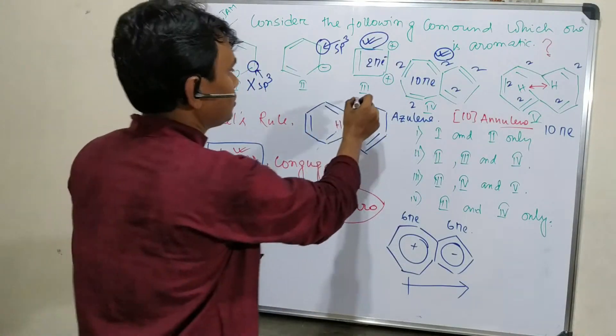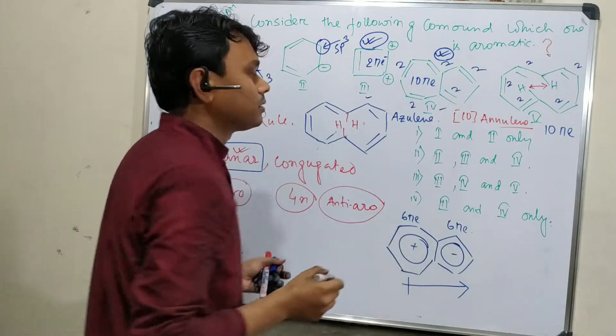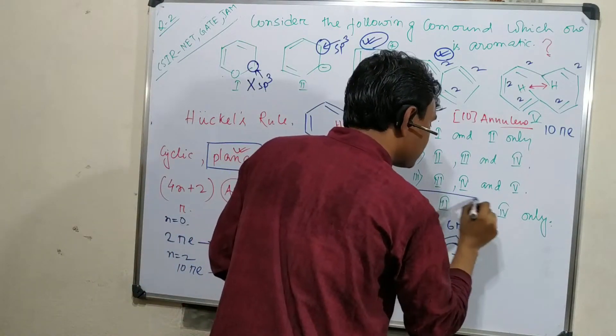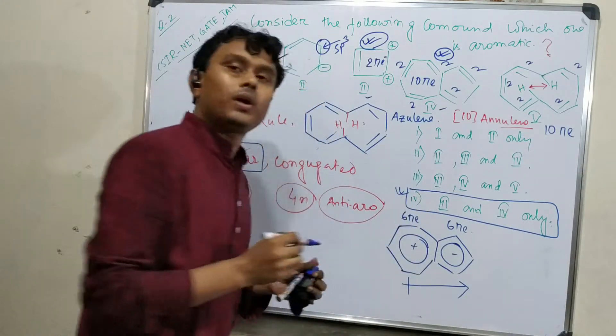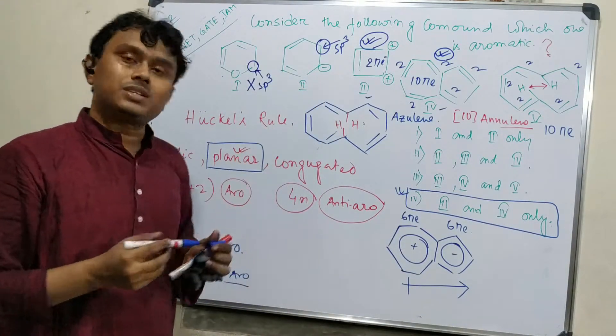So 3 and 4 aromatic. Where is 3 and 4? Here, 3 and 4 aromatic. So this is the answer. This is a detailed description.